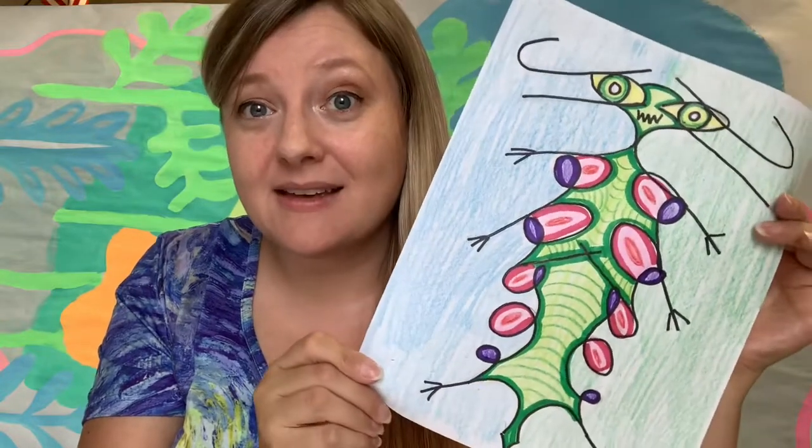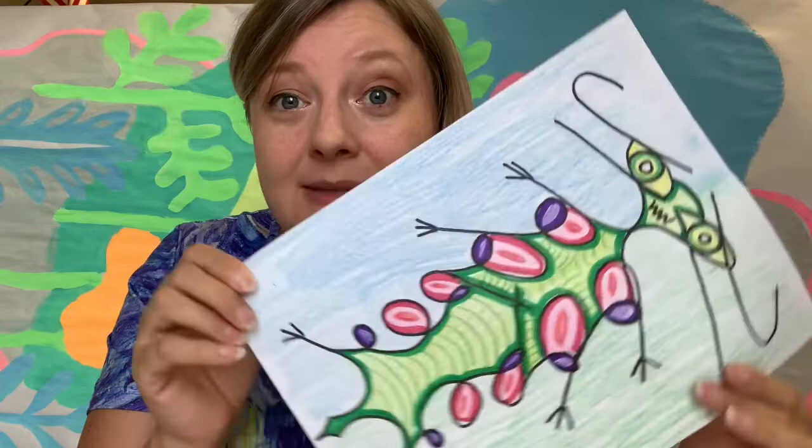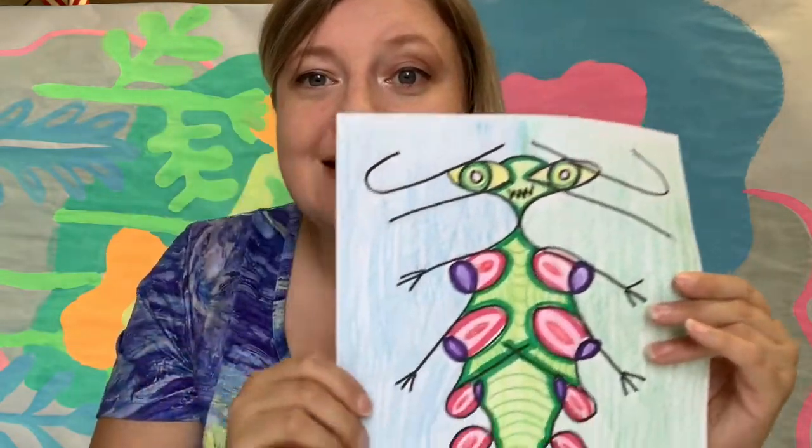We are going to create these symmetry bugs or aliens out of your very own name. You're going to be signing your name in cursive on half of the page and we're going to create a mirror image along the center line creating symmetry.